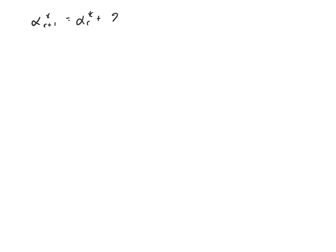Alpha sub r+1 star, the coefficient in front of x star after applying the subroutine r+1 times, is equal to alpha sub r star plus 2 times mu sub r, where mu sub r is the average coefficient after applying the oracle to the state psi of r. That is, mu sub r equals 1 over 2^n times (2^n minus 1) times alpha sub r minus alpha sub r star. The negative sign is because applying the oracle negates the coefficient in front of the basis state x star.